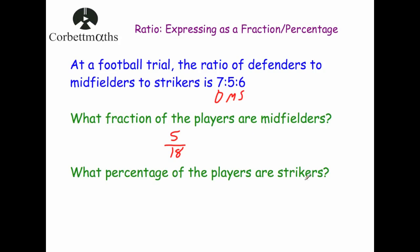What percentage of the players are strikers? There are eighteen in its simplest form. Writing strikers as a fraction gives six out of eighteen. Cancelling down by dividing by six gives one third. One third as a percentage is 33.3 recurring percent. So to summarize: to write a ratio as a fraction, add all parts and put the relevant one on the numerator. To write as a percentage, convert to a fraction first and then convert that into a percentage.